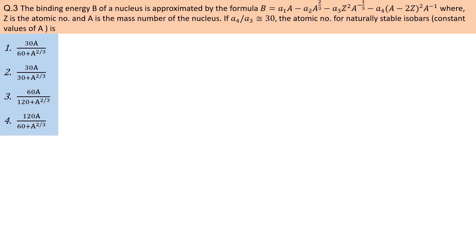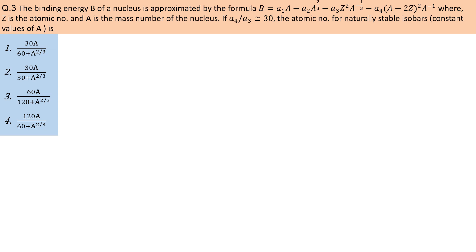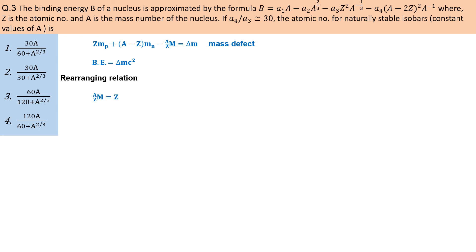The binding energy of a nucleus is approximated by a given formula. If A4/A3 equals 30, the atomic number for naturally stable isobar is — yah question semi-empirical mass formula par based hai. Z proton aur N neutron se milkar bane nucleus ka mass us nucleus ke sabhi nucleons ke total mass se kam hota hai. Mass mein is difference ko mass defect kehte hain, aur is mass defect ke equivalent energy nucleus ki binding energy kehlaati hai. Binding energy vah required energy hoti hai jo kisi nucleus ko uske constituents mein divide karne ke liye required hoti hai. Kisi nucleus ki yah binding energy kai factors par depend karti hai, jise semi-empirical mass formula se bataya jaata hai.